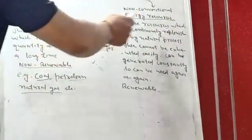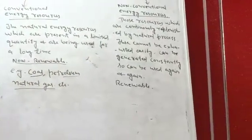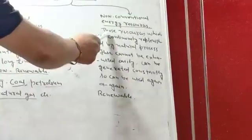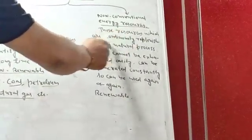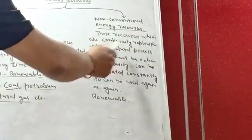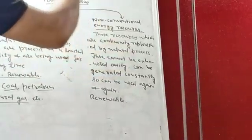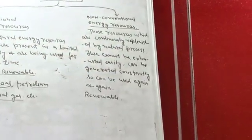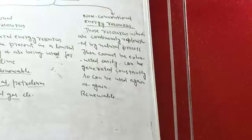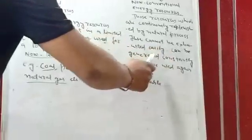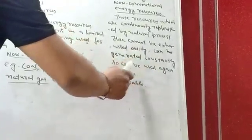So this is the second type of non-conventional energy resources. What are the resources which are continuously replenished by natural processes? This cannot be exhausted easily, can be generated constantly, so can be used again and again.